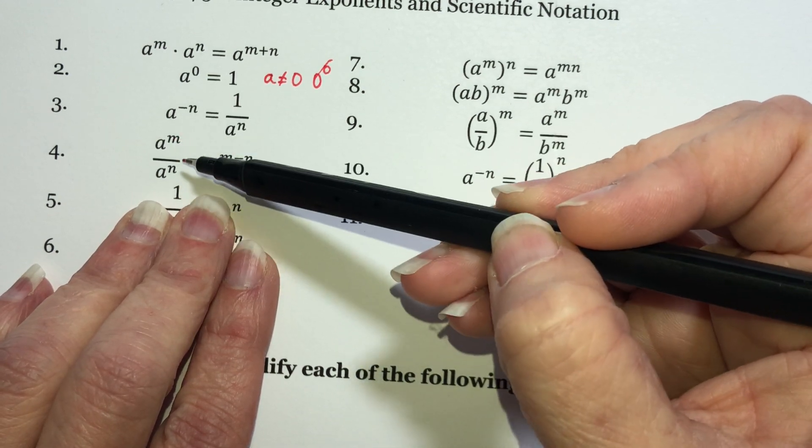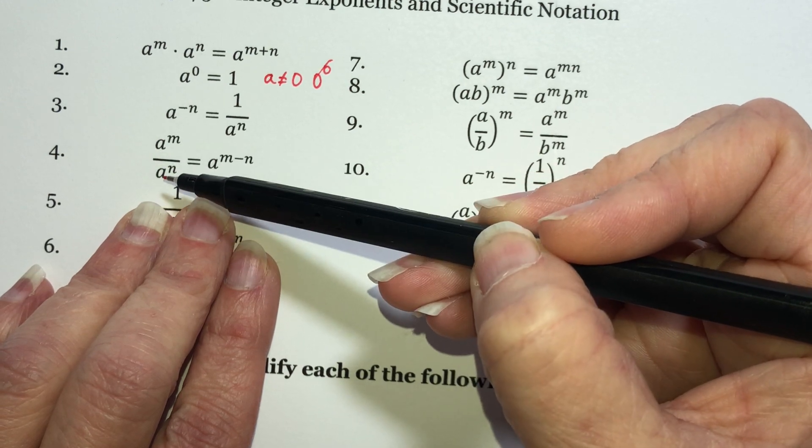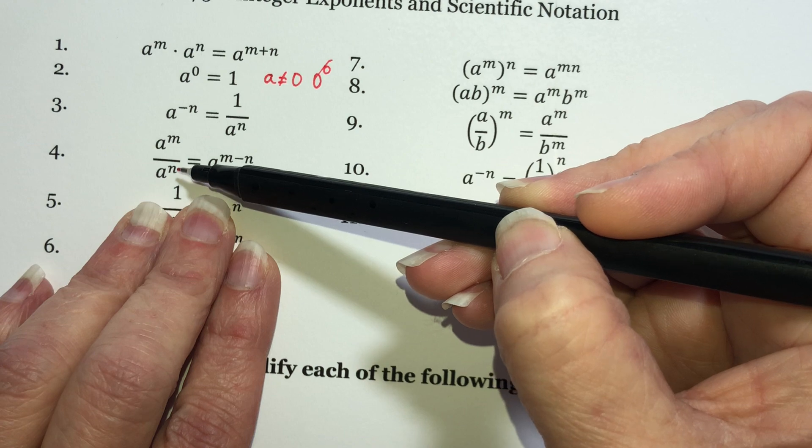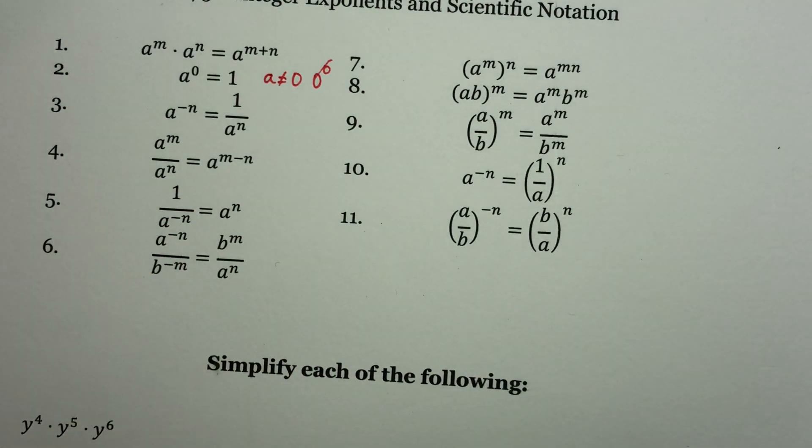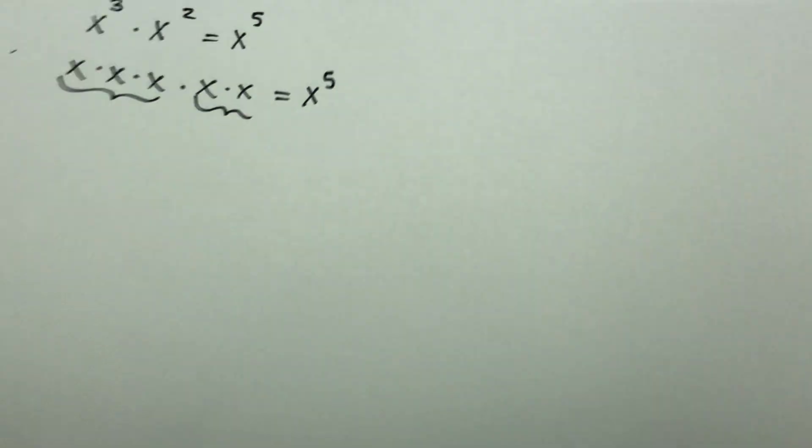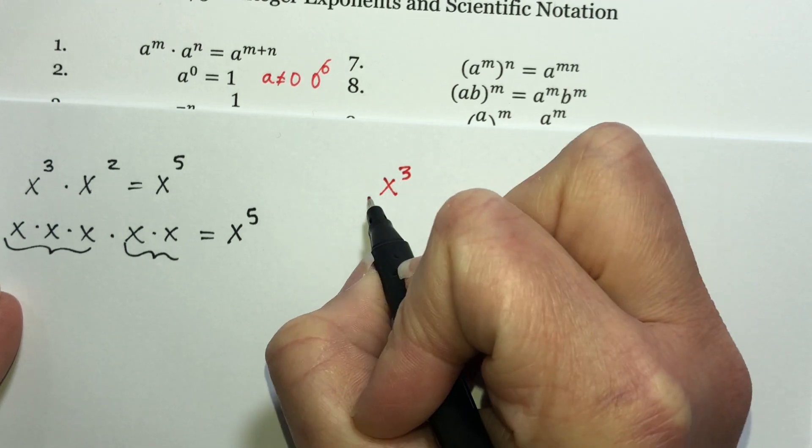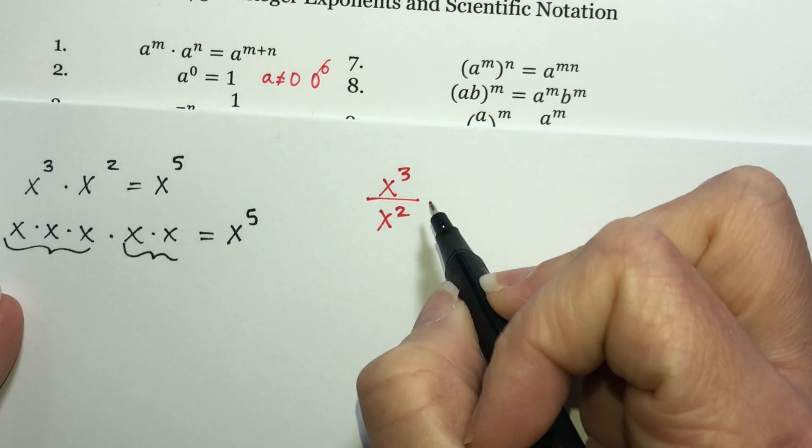Here's the division property. Notice that we have the same base. That's important. We cannot do this if our bases are different. If you have a to the m over a to the n, you get a to the m minus n. So why might we be subtracting exponents?